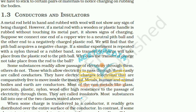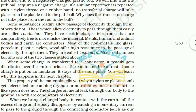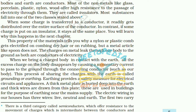Some substances readily allow passage of electricity through them — these are called conductors. They have electric charges that are comparatively free to move inside the material. Metals, human and animal bodies, and earth are conductors. Most non-metals like glass, porcelain, plastic, nylon, and wood offer high resistance to the passage of electricity — they are called insulators. When some charge is transferred to a conductor, it readily gets distributed over the entire surface. If some charge is put on an insulator, it stays at the same place. This is why a nylon or plastic comb gets electrified on combing dry hair, but a metal spoon does not.